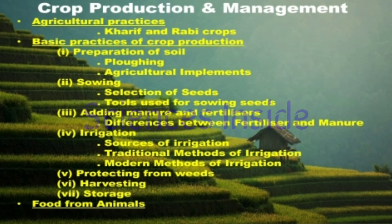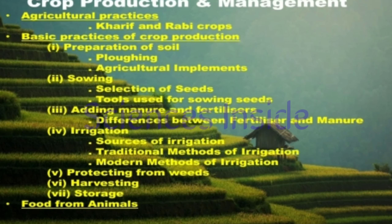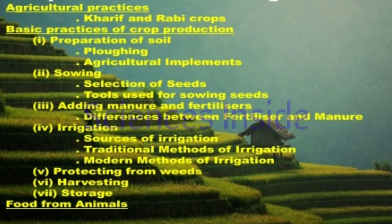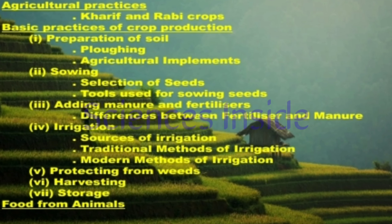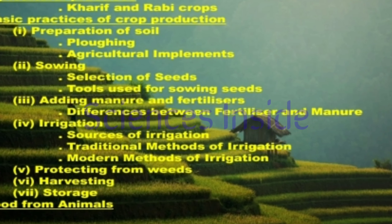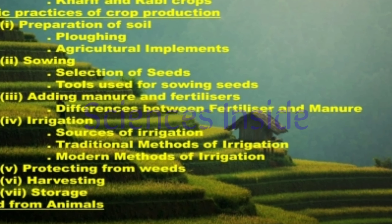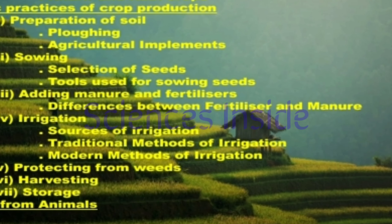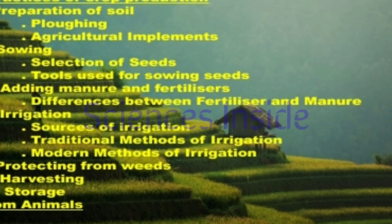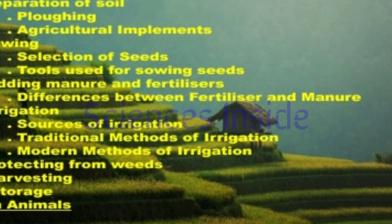In chapter one you will learn about the following things. First is agricultural practices, in which you will study about kharif and rabi crops. The second one is basic practices of crop production, which include preparation of soil, sowing, adding manure and fertilizers, irrigation, protection of crops from weeds, harvesting and storage, and then food from animals.